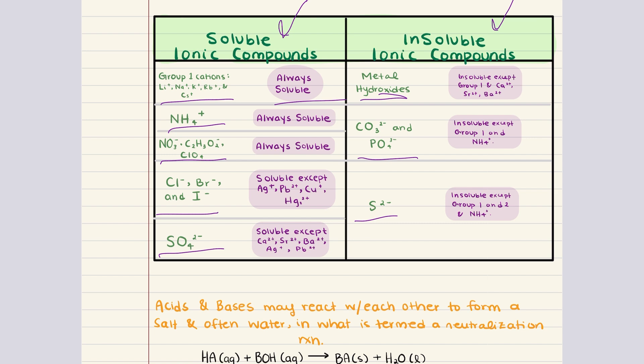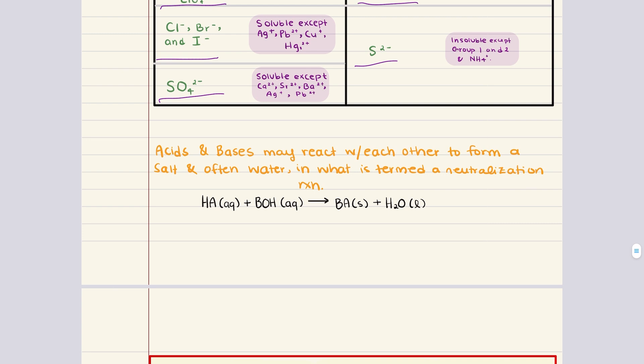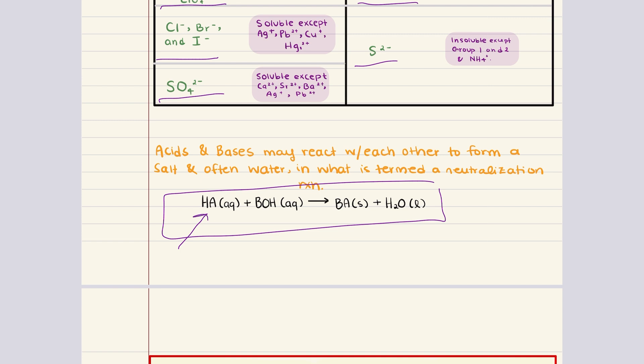Like we said earlier, acids and bases can react with one another to form salts, and this process is often called neutralization. In a neutralization reaction, the hydrogen ions from the acid react with the hydroxide ions from the base to form water, while the remaining ions combine to form the salt. So to repeat, a neutralization reaction is a chemical reaction in which an acid and a base react to form a salt and water. The general form of a neutralization reaction is shown here — the acid and base react together to form a salt and water.